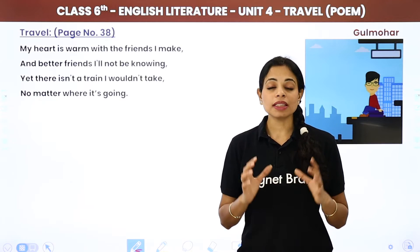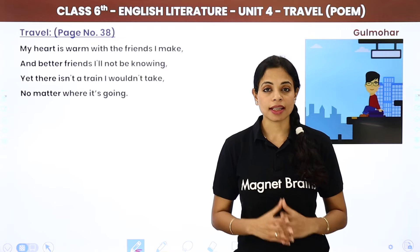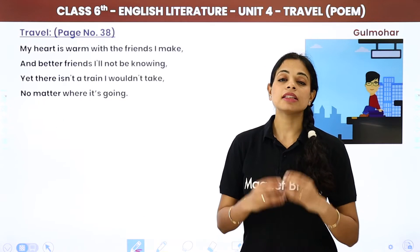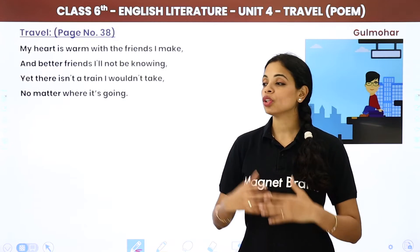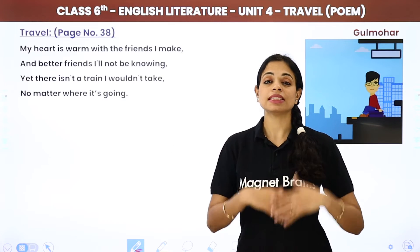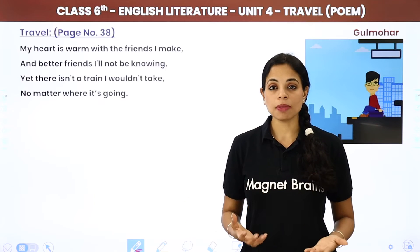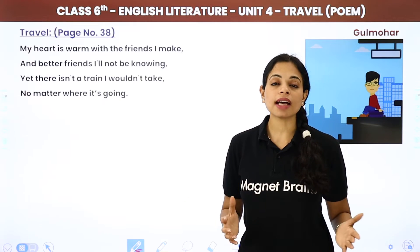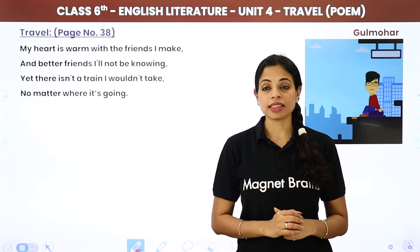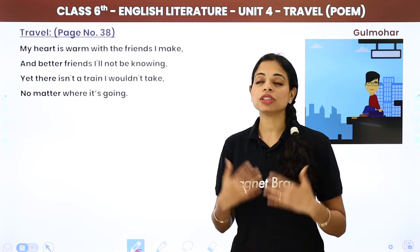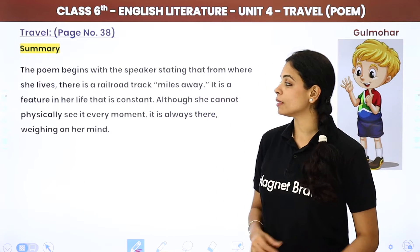That was the explanation of the poem. Basically, the poet has a deep longing to travel. She wants to explore new places and new destinations, meet new people. She is happy with those around her, but she still wants to explore things she has not yet seen. Now we move to the summary.